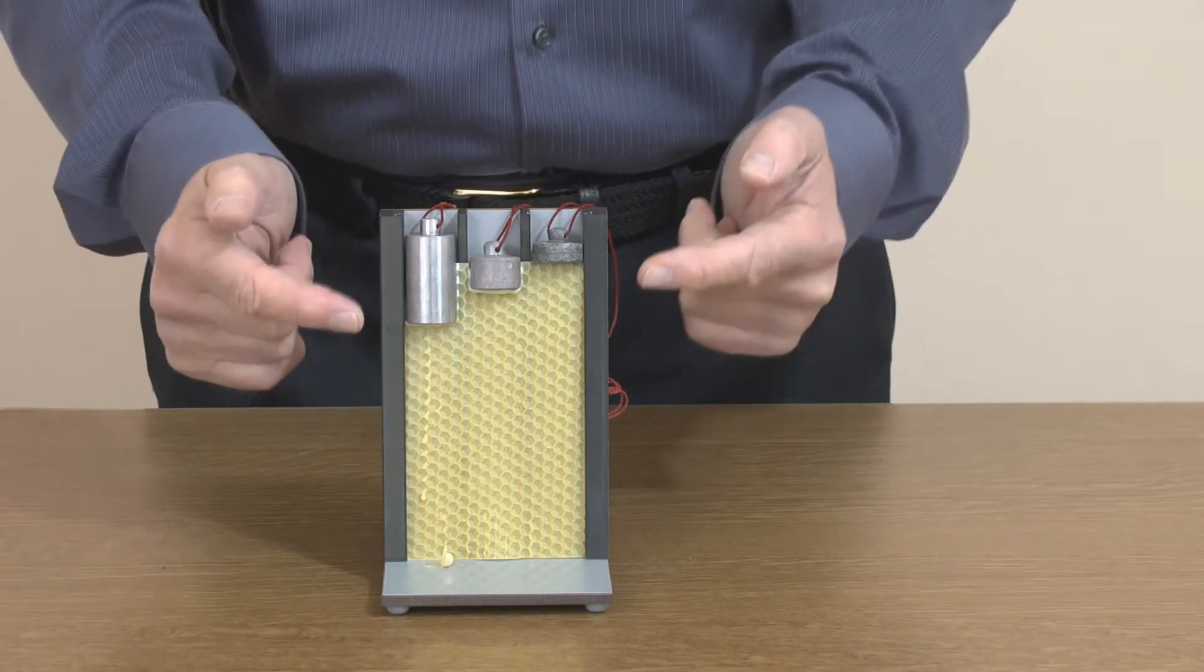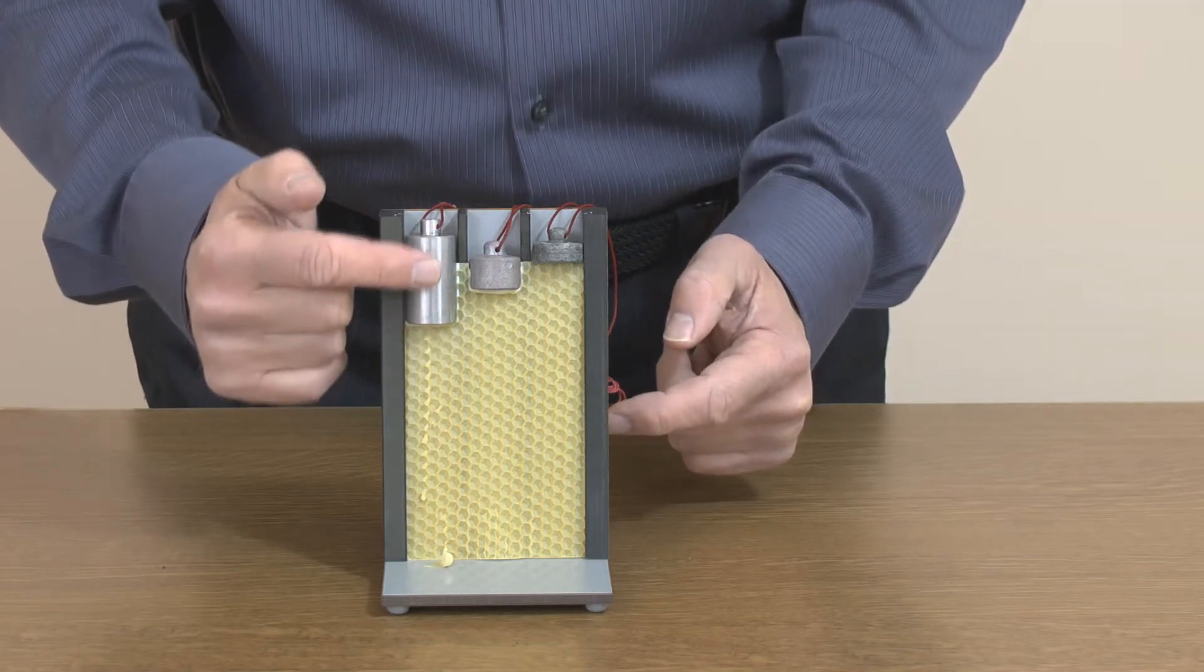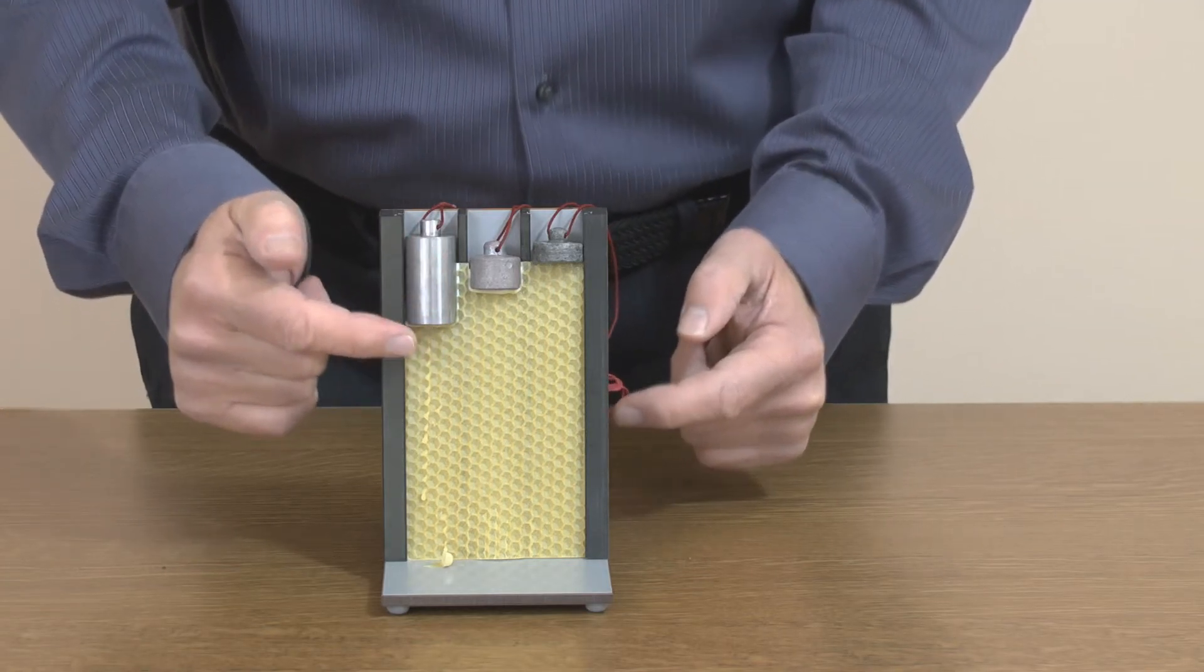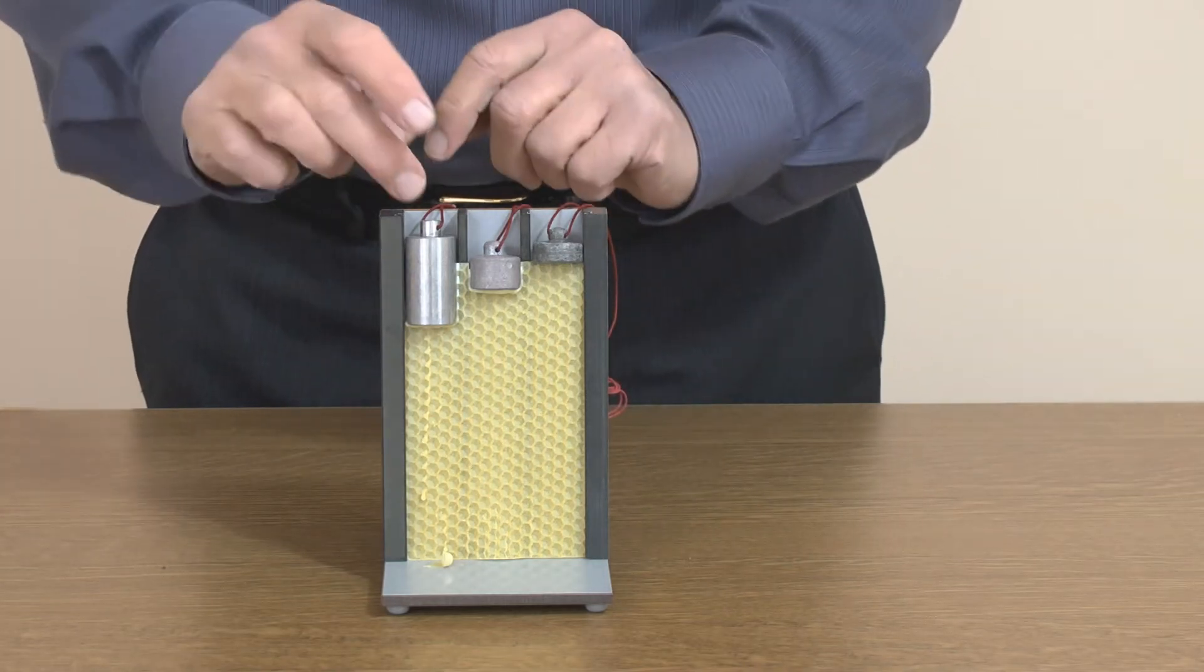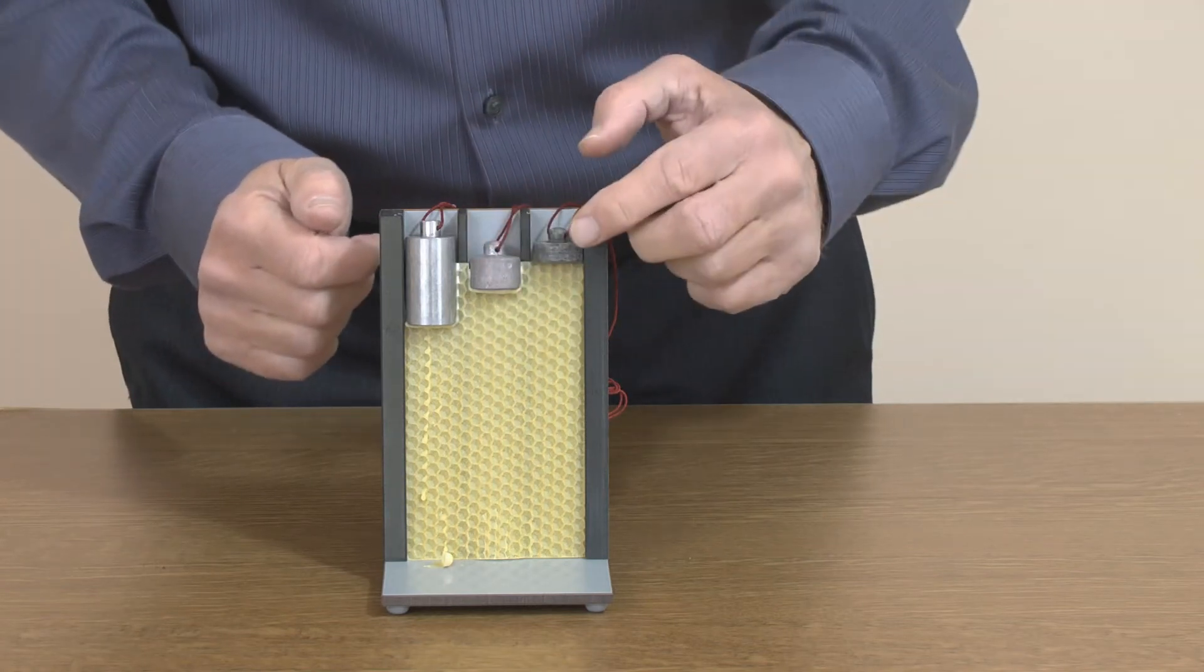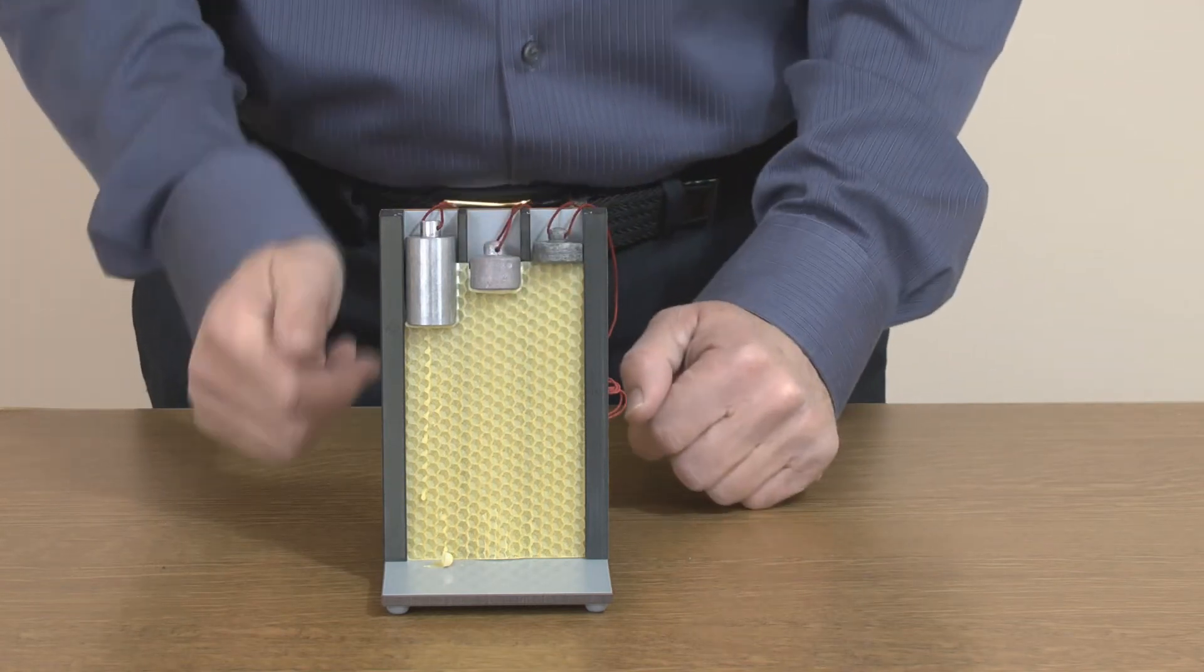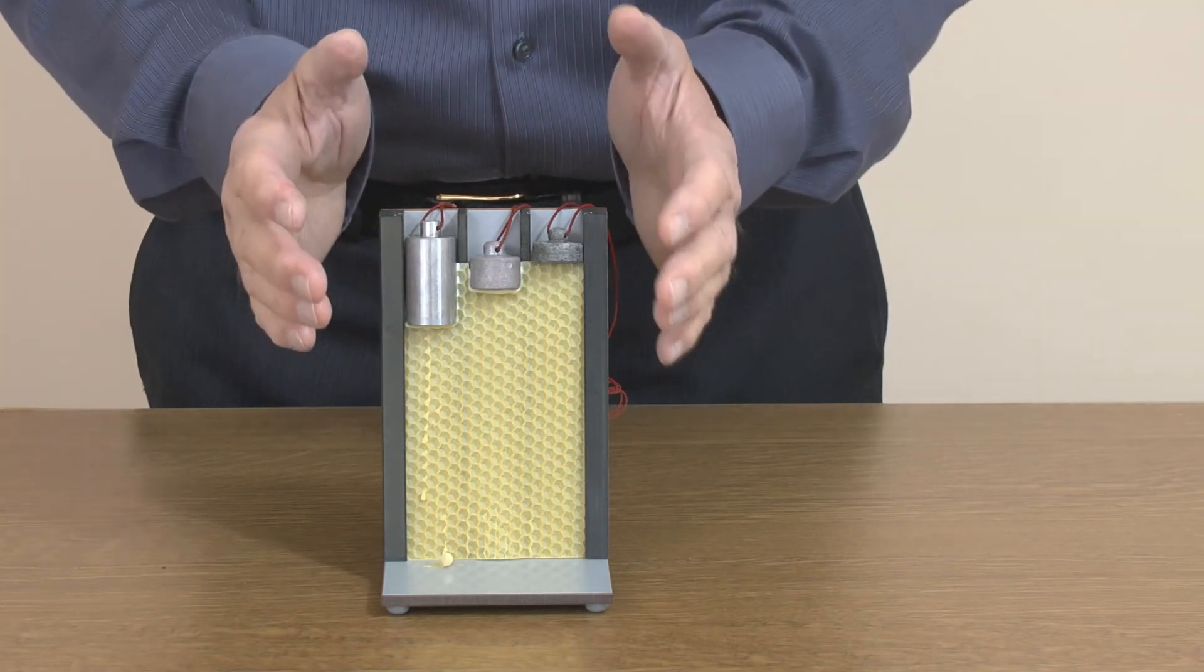To melt that wax needs energy. This aluminum must have most energy because it's melted most of the wax. Even though they're all at the same temperature, this has melted most wax. And secondly is this one, and third is the bismuth. Heat energy and temperature, different quantities.